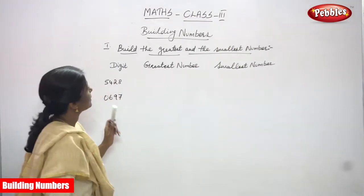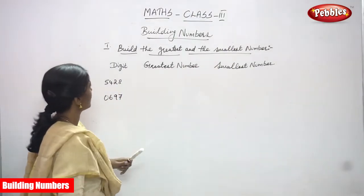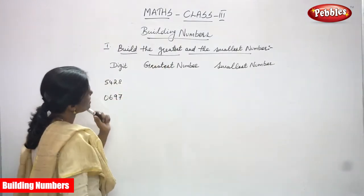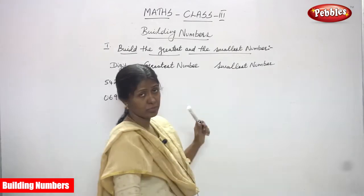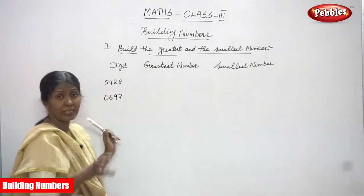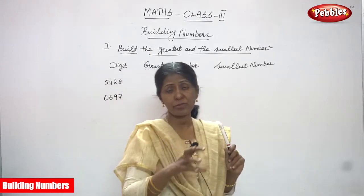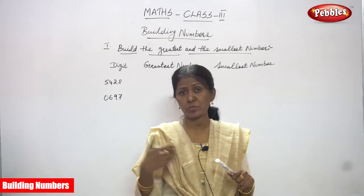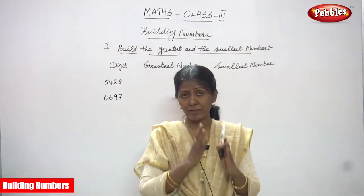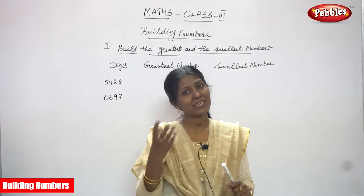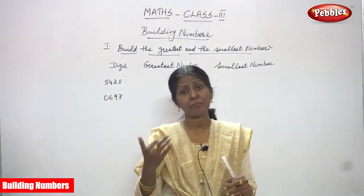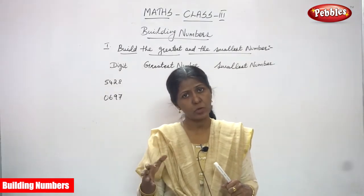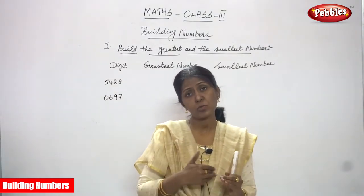To build the greatest and the smallest number, we are going to see building numbers. The question is: build the greatest and the smallest number. To build the greatest number, we arrange the numbers in descending order — that means greatest to smallest.